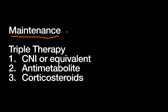The most common regimen is maintenance therapy. Speaking in broad generalities, the most common maintenance regimen is triple therapy: first, a CNI or calcineurin inhibitor or equivalent medication; second, an anti-metabolite or anti-proliferative medication; and third, corticosteroids. Let's talk about each of these in a little more detail.